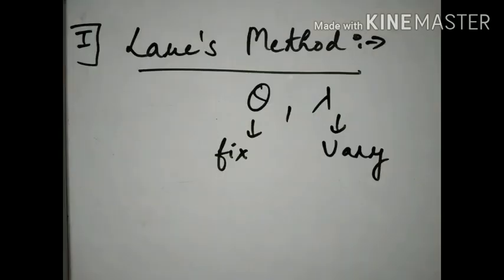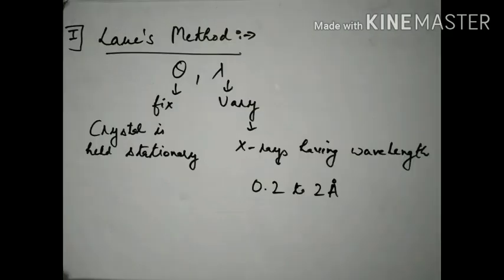The first method is Laue's method. In this method, theta (the angle) is fixed, and the wavelength is varied. Theta is fixed by keeping the crystal stationary. X-rays with wavelengths ranging from 0.2 to 2 Angstroms are used, so we have varying wavelength X-rays. So: theta is fixed, lambda is varying.